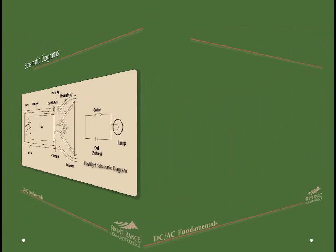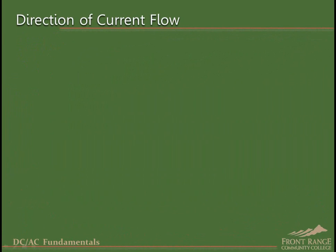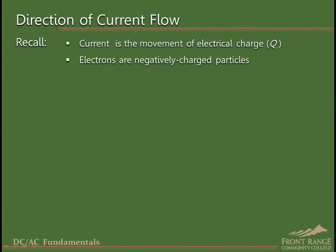Now we will define the direction of current flow in an electric circuit. First, recall that current is defined as the movement of charged particles. Electrons are charged particles, so when electrons move in a circuit, this constitutes current flow.